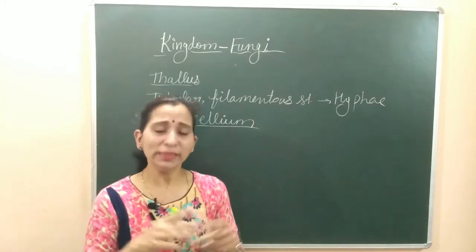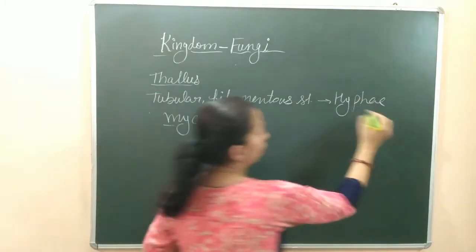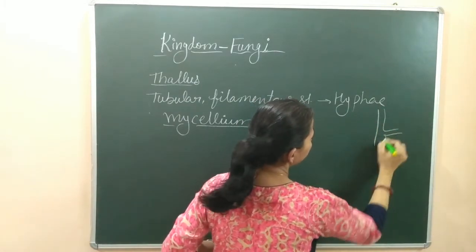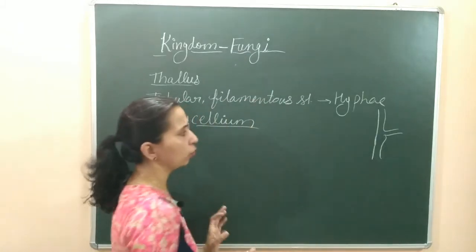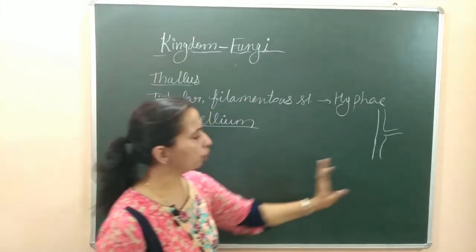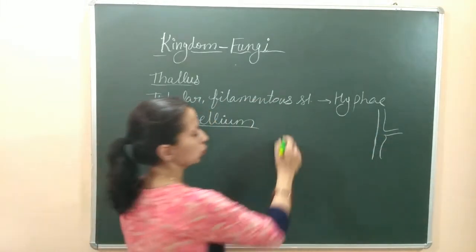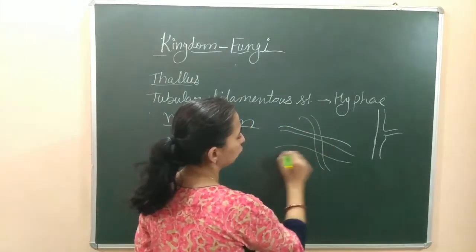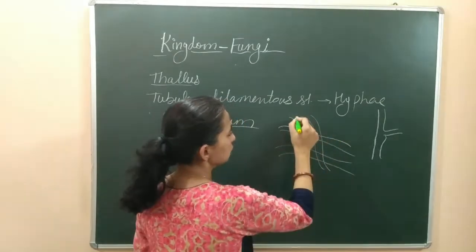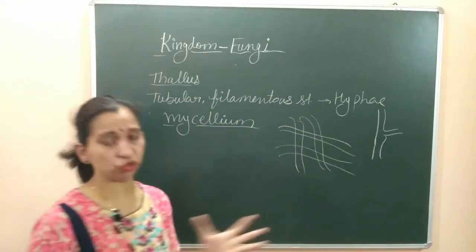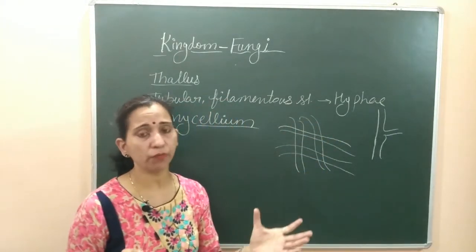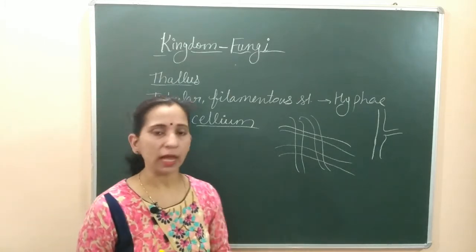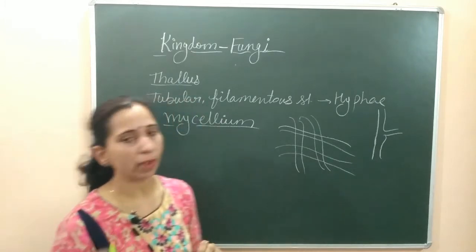Mycelium is a combination of many hyphae forming a net-like structure. When many hyphae join together forming a net-like structure, we call it mycelium. So fungi have a structure known as mycelium. These hyphae can be of two types: they can be aseptate or septate.